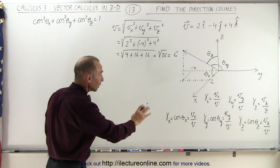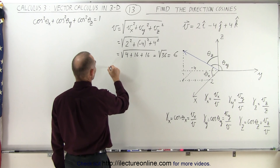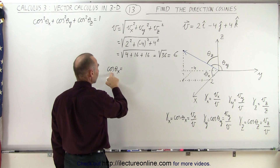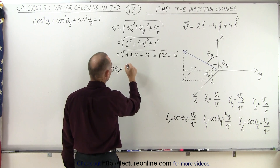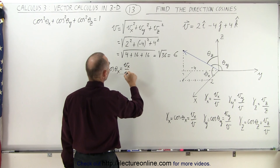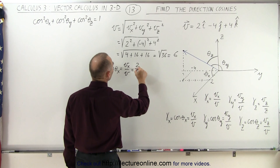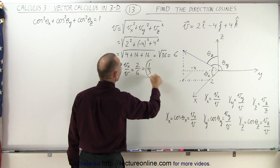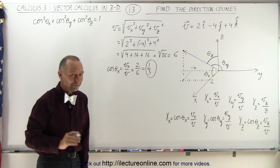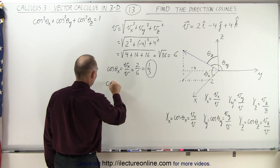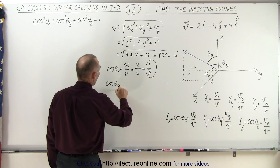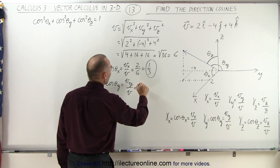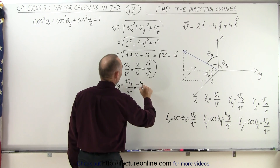Now to find the three direction cosines: the cosine of theta sub x, the direction cosine relative to the x-axis, is v sub x over v, which equals 2 divided by 6, which is 1 third. For the second direction cosine, cosine of theta sub y is v sub y over v, which equals negative 4 over 6, which is negative 2 thirds.